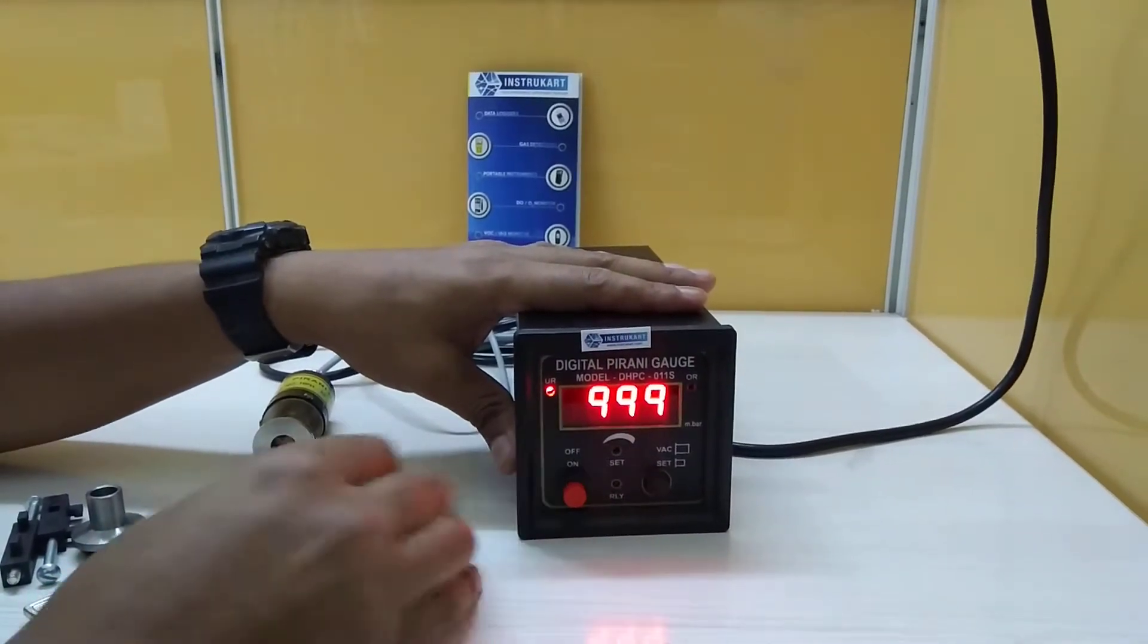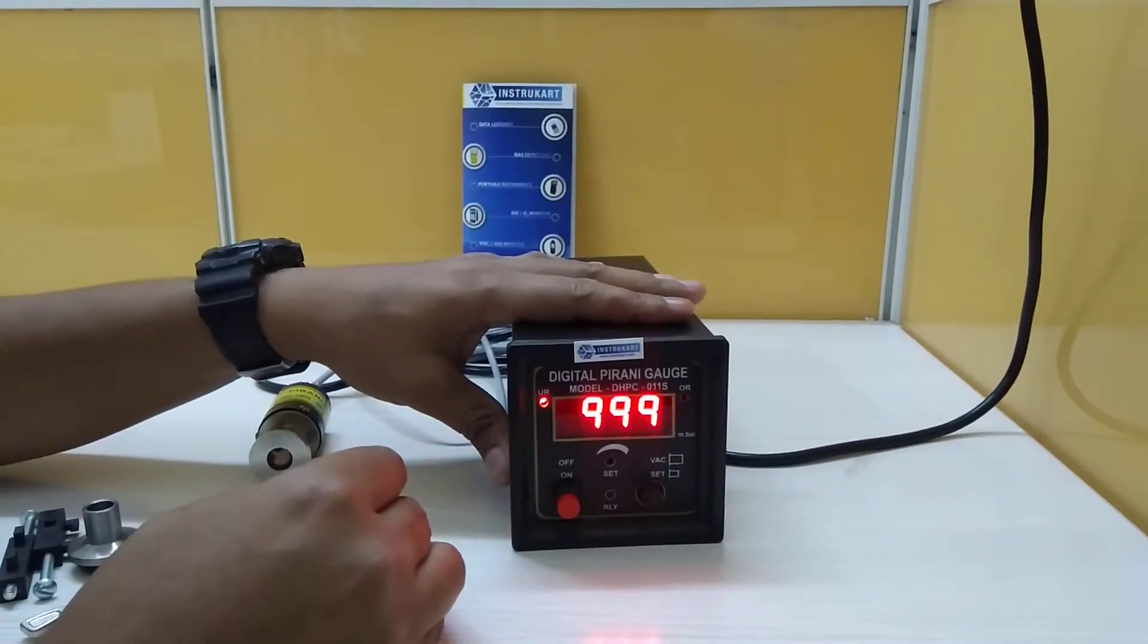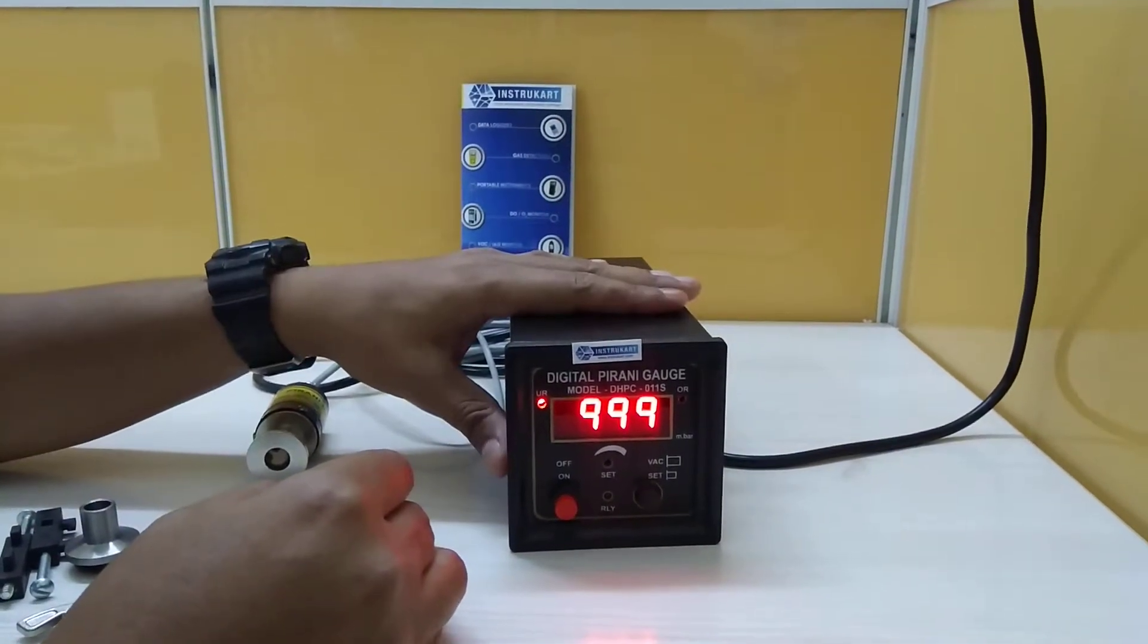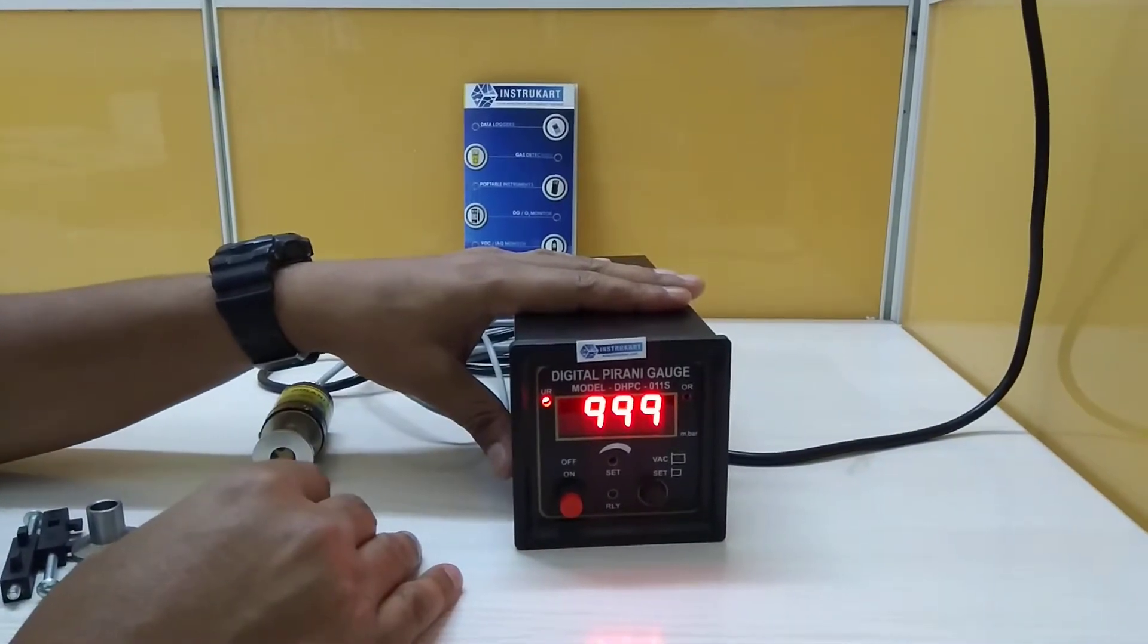On this Pirani gauge the range is 999 to 0.001 millibar and this is a model with the controller. It means that we can have a setpoint controlled at any vacuum range.